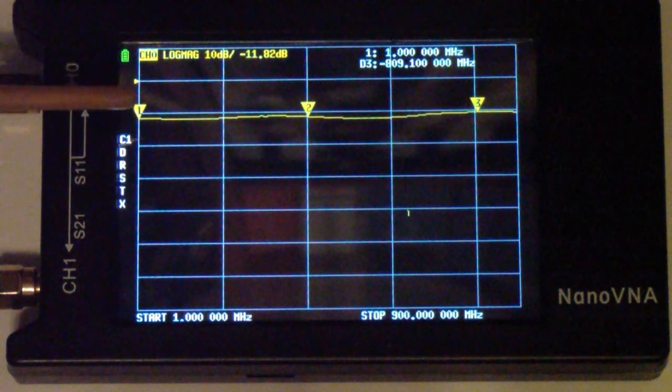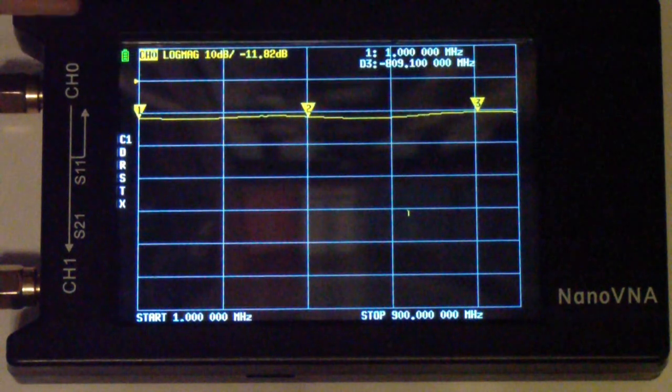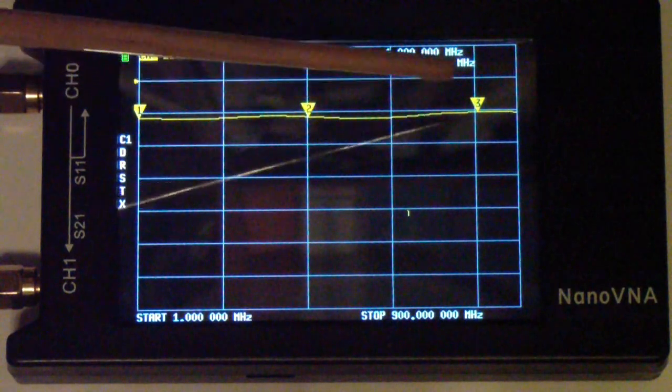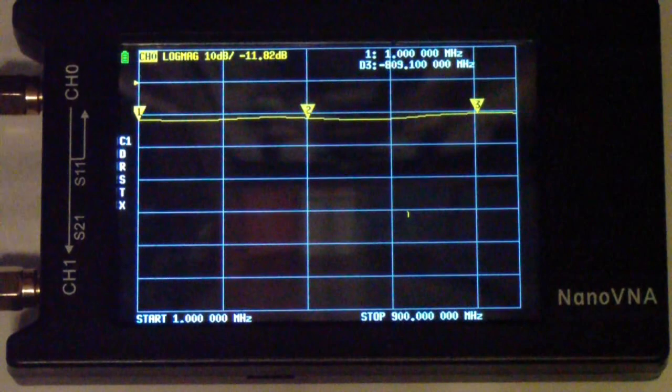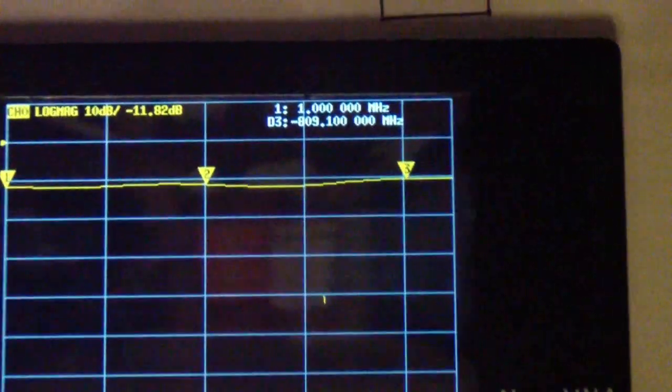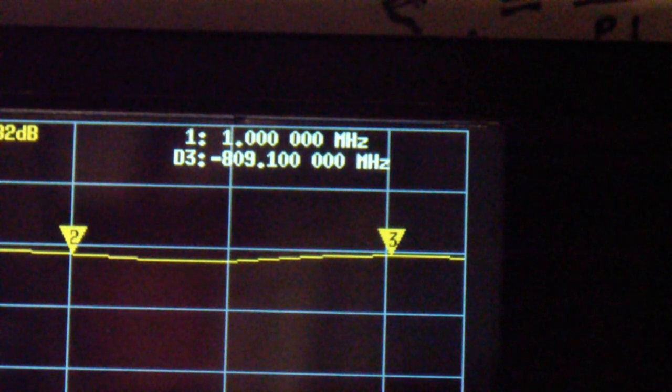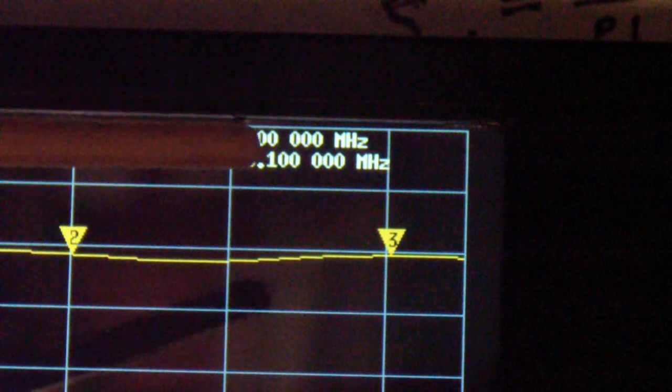There are three markers, one at the left, one about in the middle, and one near the right. They are set at 1 megahertz, about 400 megahertz, and about 800 megahertz. You'll notice that, let me see if I can zero in on this and get it to focus. There we are. You notice that it shows number one, that means marker number one is at 1 megahertz.